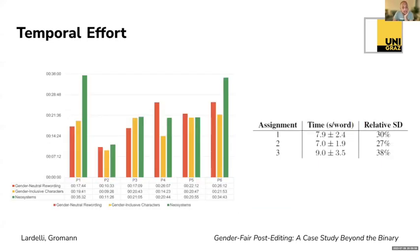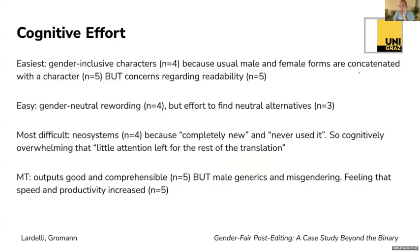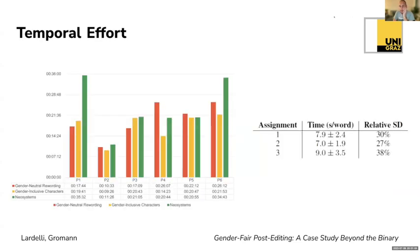Looking at temporal effort — the translation times — we see that generally new systems took longer for professional translators, but there are great differences among participants, as the relative standard deviation is quite high. Basically, we did not find statistically significant differences in temporal effort across these three strategies.